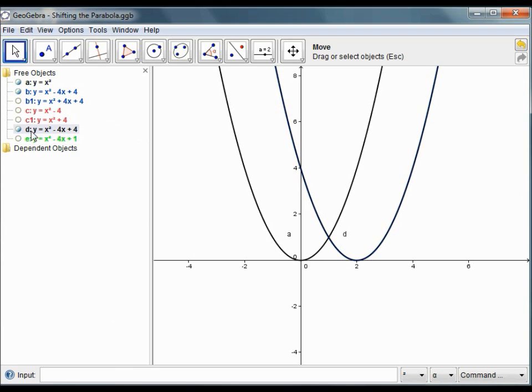As you can see, D is the same as B, x squared minus 4x plus 4.